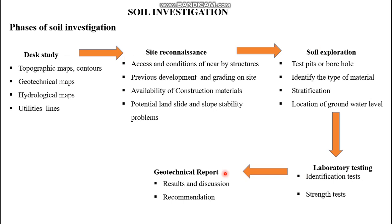During the desk study, prior to commencing a site visit, by referring to different types of topographic and contour maps we can identify the elevation and land features of the area — whether the terrain is rolling, flat, escarpment, or mountainous. We can also identify the type of soils using geotechnical maps, identify existing water bodies using hydrological maps, and identify utility lines such as power transmission lines or telecommunication lines prior to investigation.